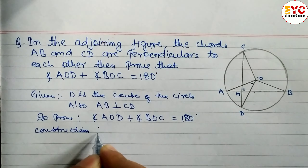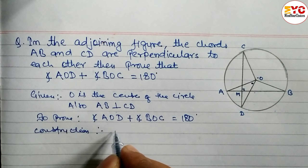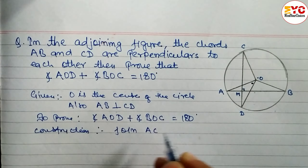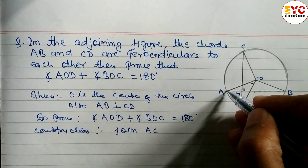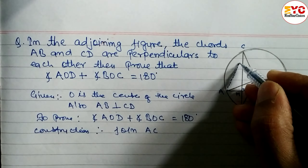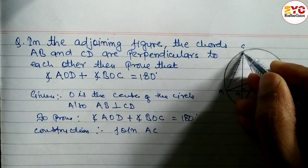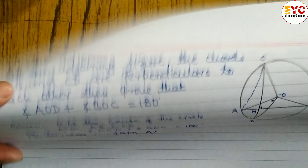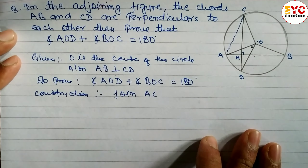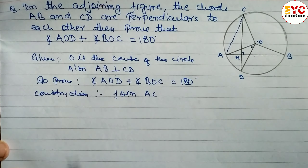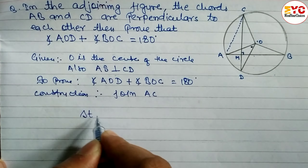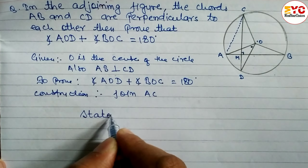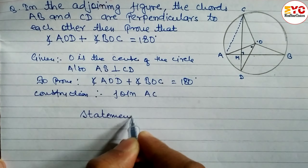Construction: join AC. You have to join AC using a scale and pencil. After that, draw one box for Statement on one side and Reason on the other side, so it looks very clear.